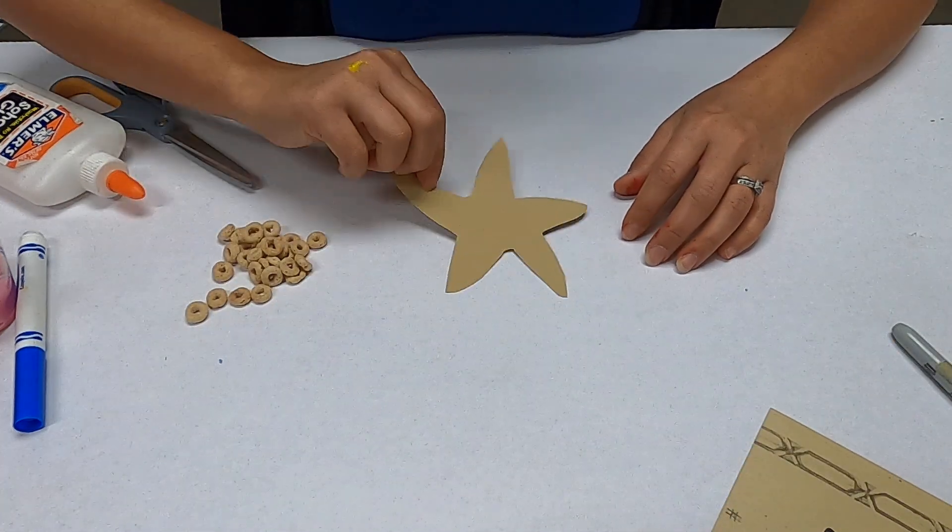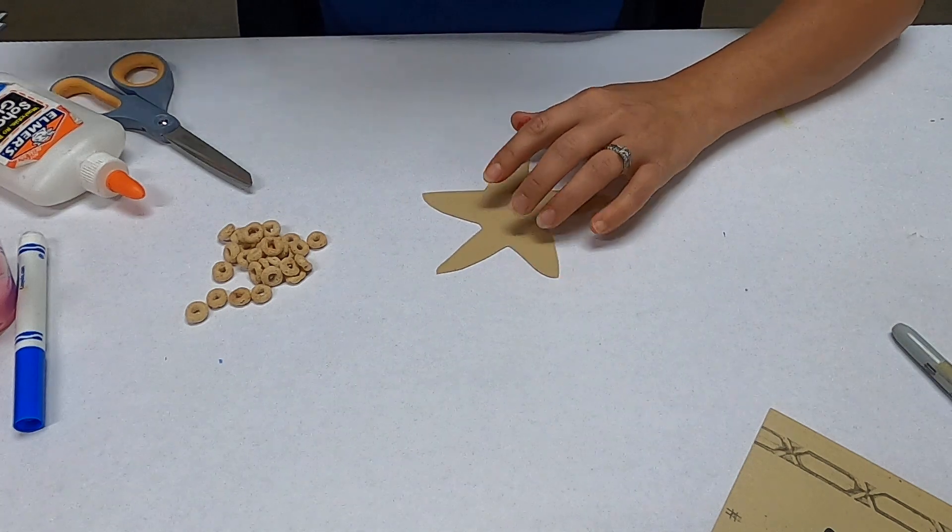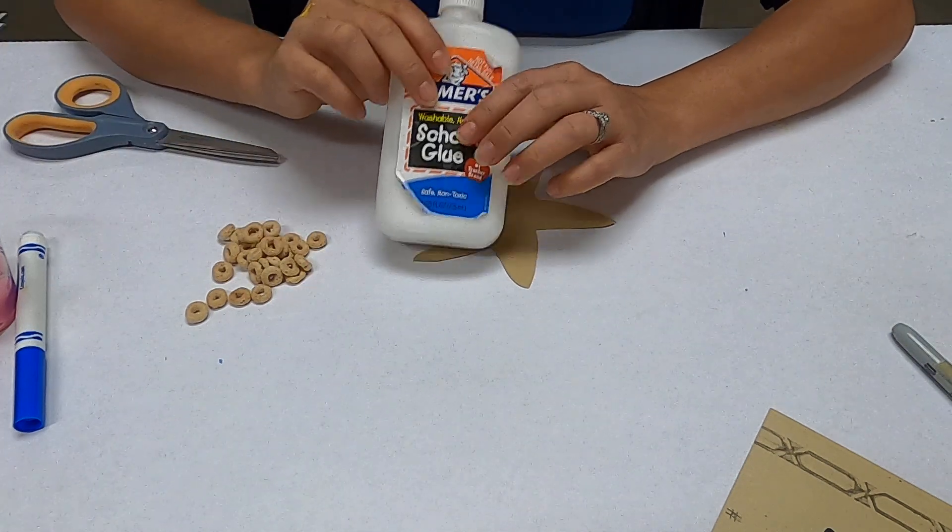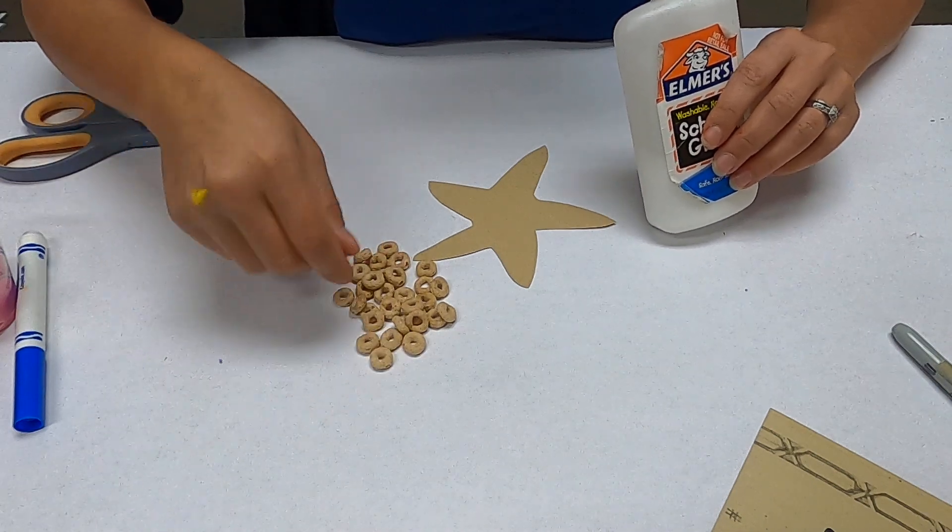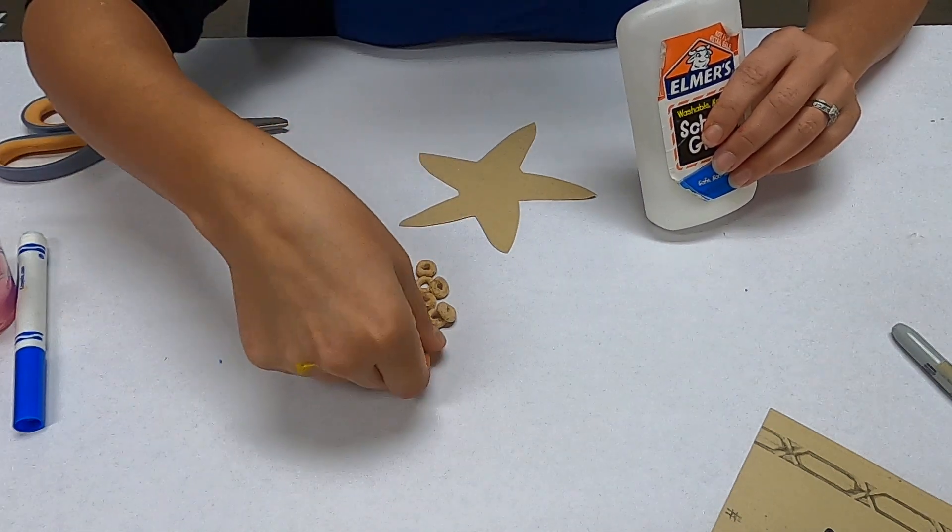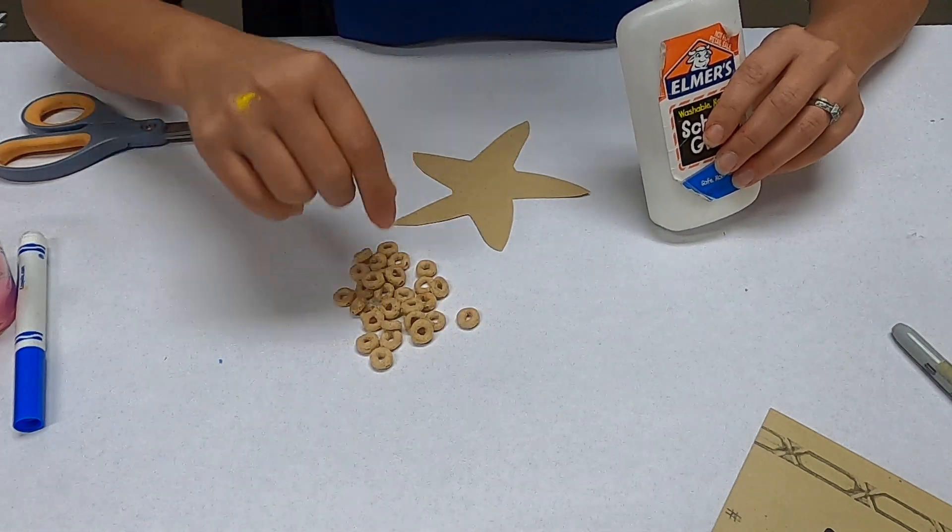Now to complete this one you will need some Elmer school glue and some Cheerios, Froot Loops, or any kind of cereal that has a circle.